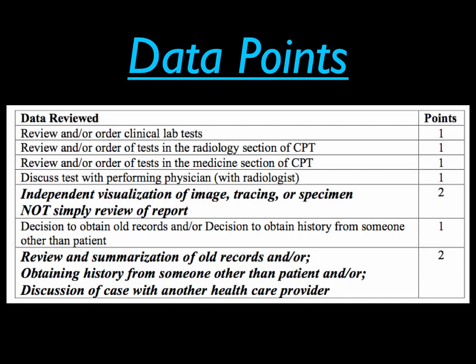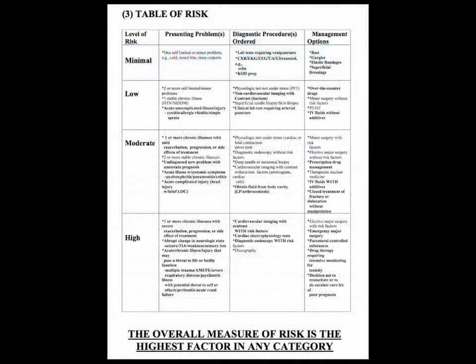Only the medically reasonable and necessary services for the condition at the encounter are considered when selecting EM service. The table of risk shows the level of risk — minimal, low, moderate, and high — along with the presenting problems, diagnostic procedures, and management options associated with each level. If you see a management option that involves IV drips or intubation, that already puts you at high risk and a high level of documentation.